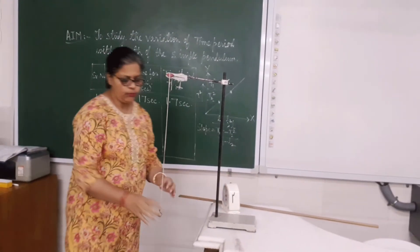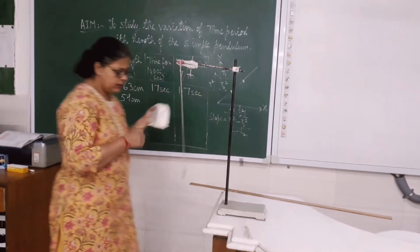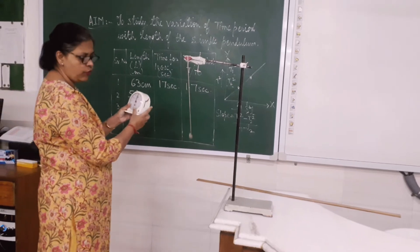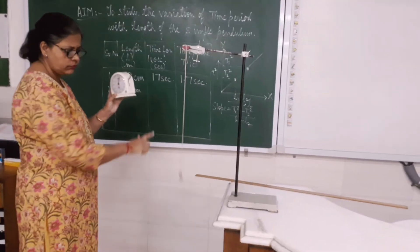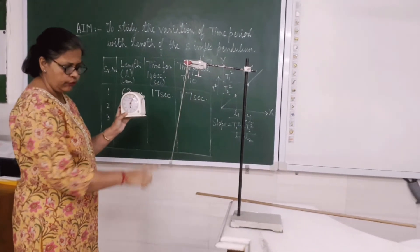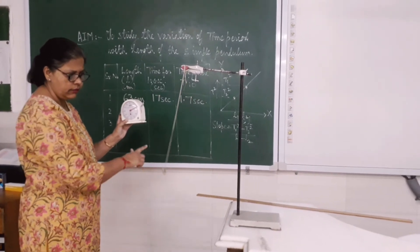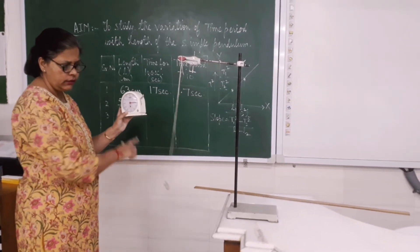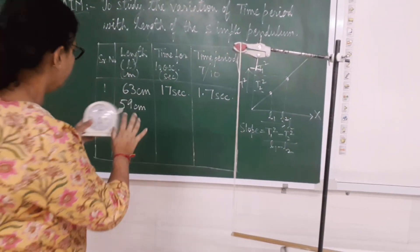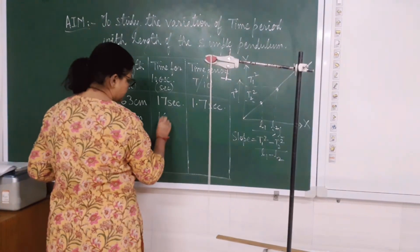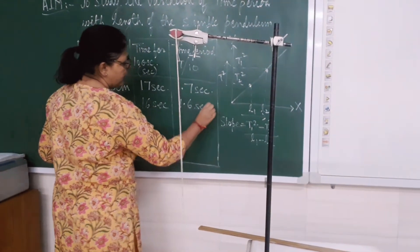Again, I am going to measure the time taken to complete 10 oscillations. I start: 1, 2, 3, 4, 5, 6, 7, 8, 9 and 10. You can see, children, the reading is now going to be around 16 seconds. So now it is 16 seconds and the time period will be 1.6 seconds.